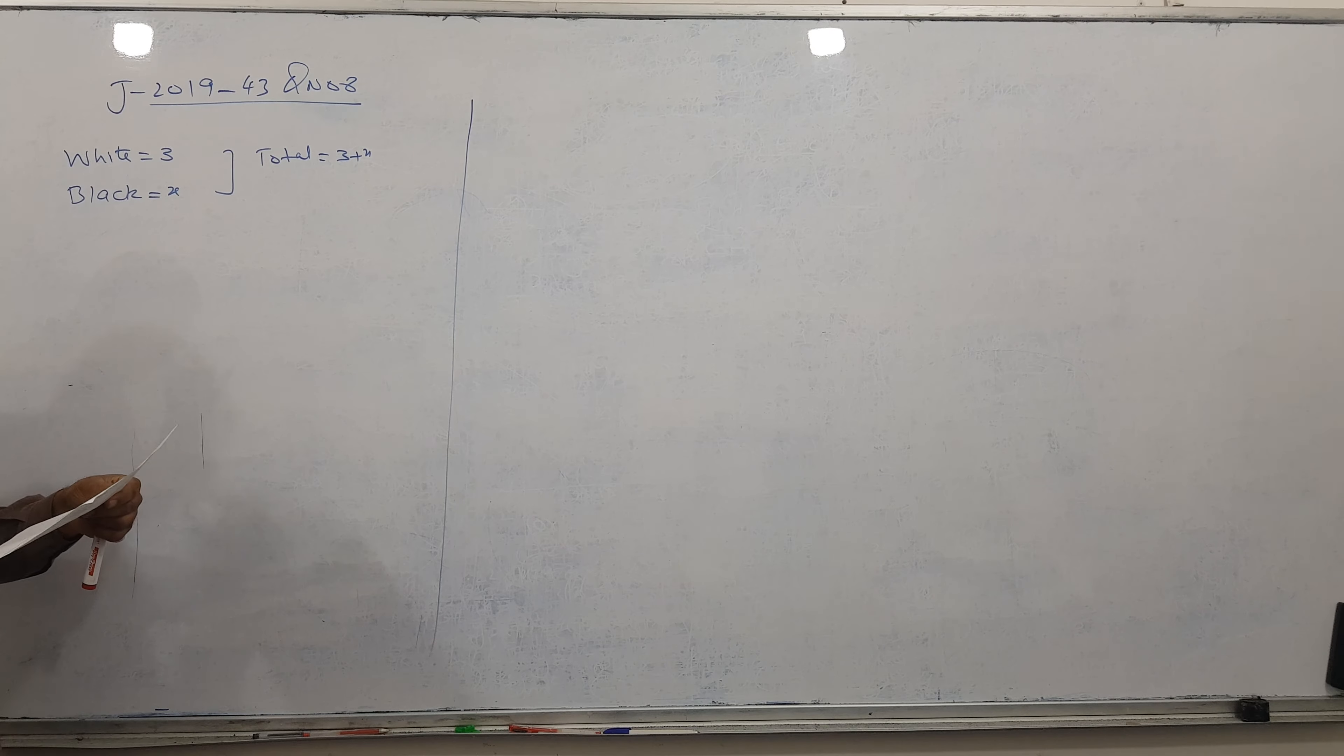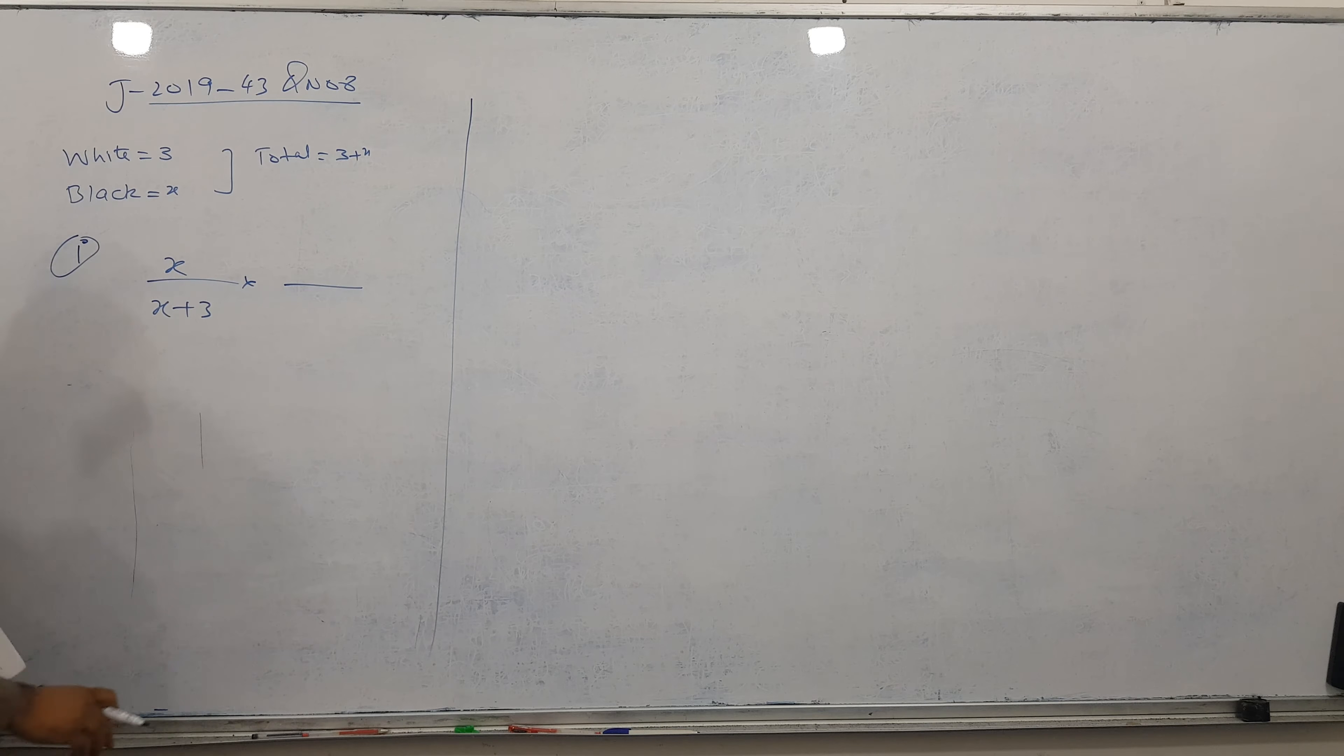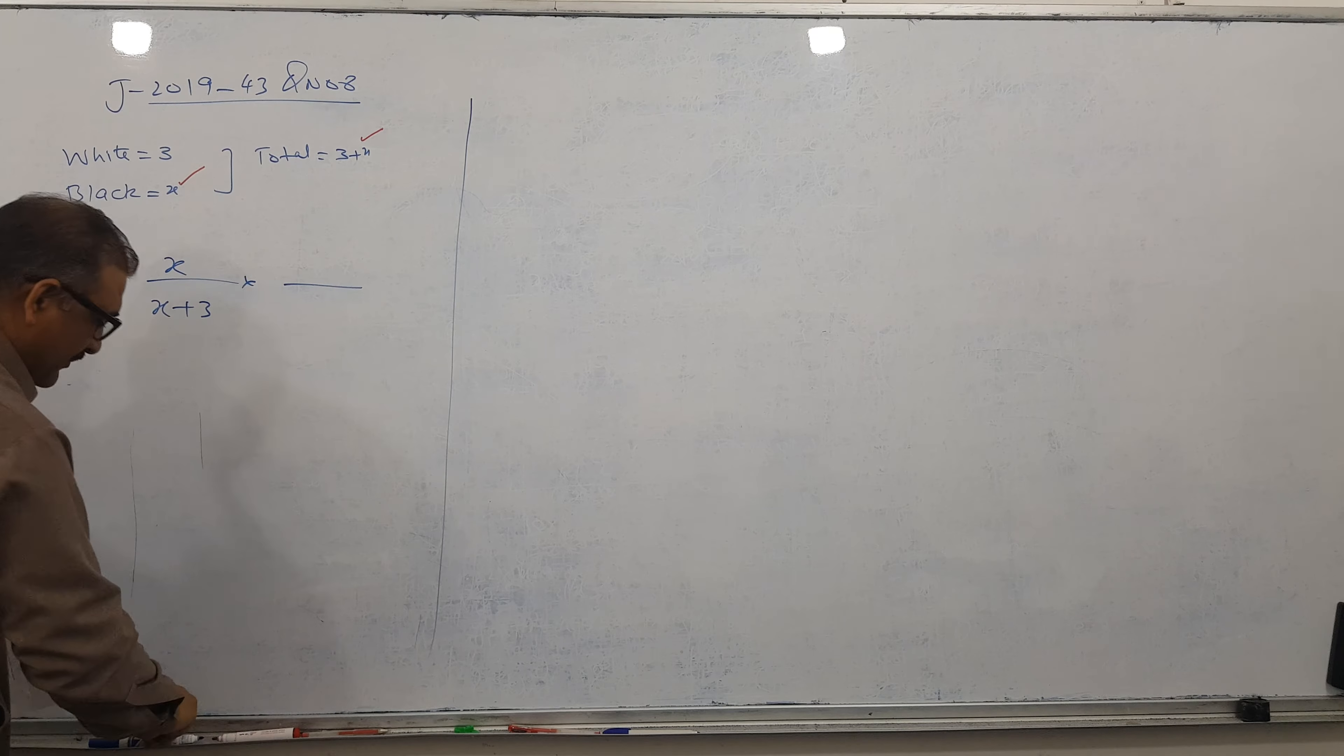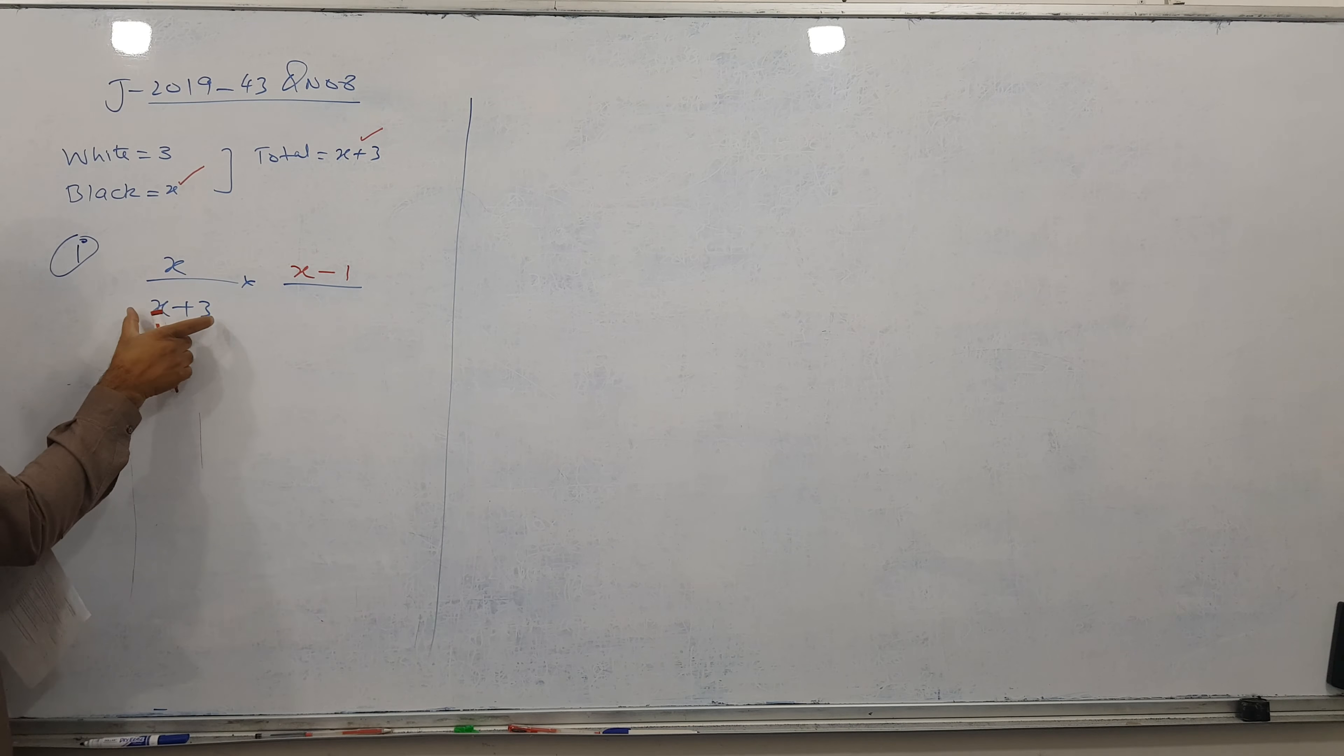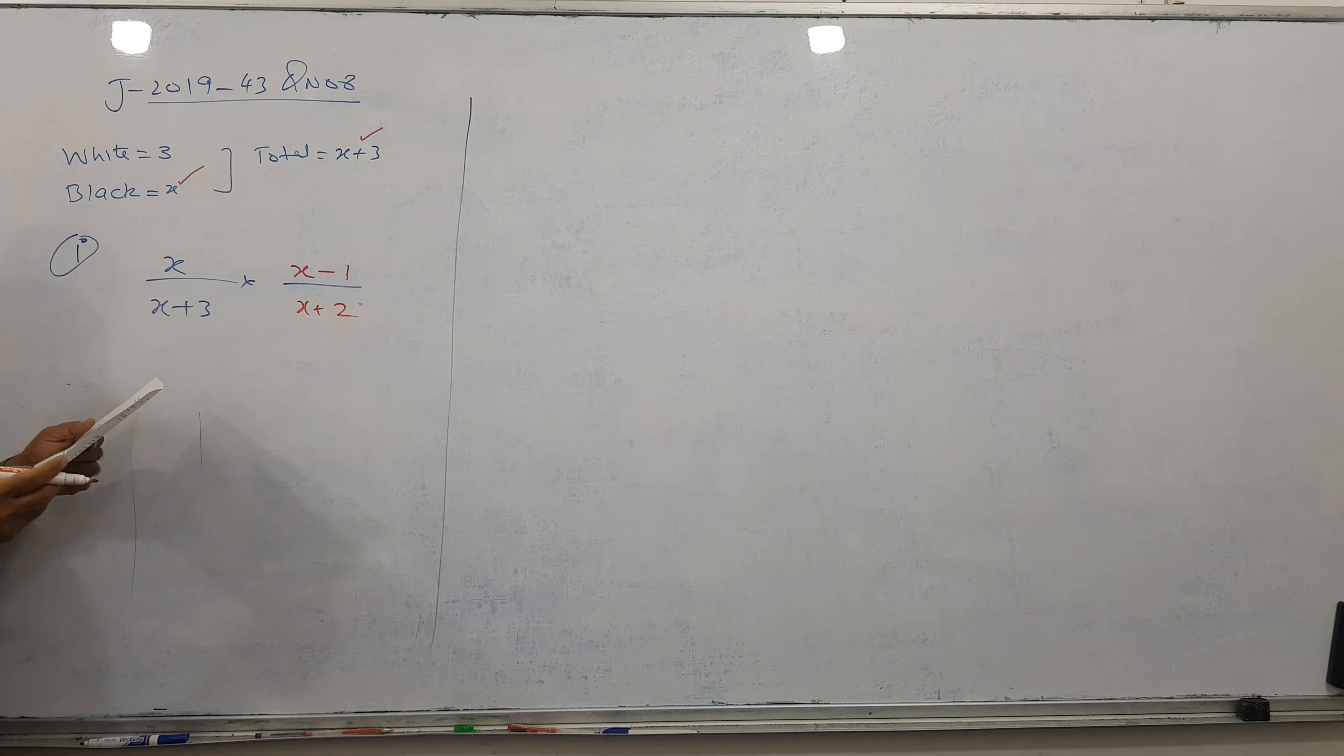The first part is asking for the probability of drawing 2 black counters. He said X over X plus 3 times something here. Since it's without replacement and we need 2 black counters, first black is X out of X plus 3 total. When you take one black out, you have X minus 1 black remaining and X plus 2 total remaining. So the answer is X over X plus 3 times X minus 1 over X plus 2. First part is over.